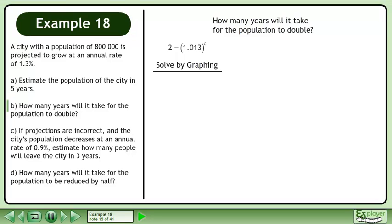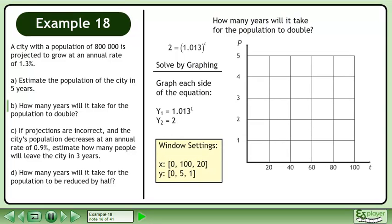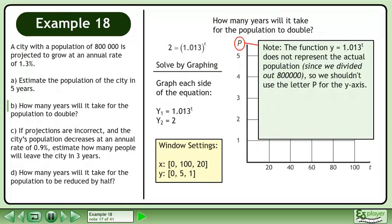We can solve this by graphing. Graph each side of the equation using the window settings shown. Note that the function y equals 1.013 raised to the power of t does not represent the actual population since we divided out 800,000, so we shouldn't use the letter p for the y-axis.